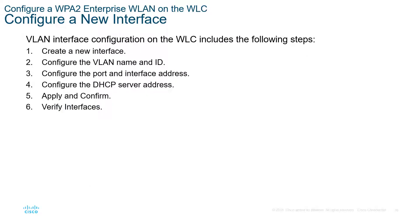To configure a new interface on our wireless LAN controller: create the new interface, configure the VLANs, configure the ports and interface addresses, set up DHCP, apply it, and verify.